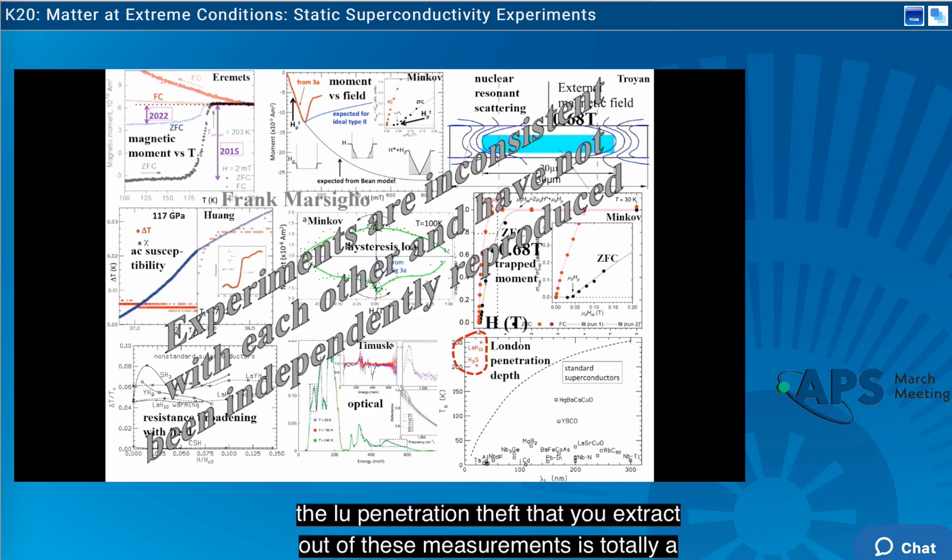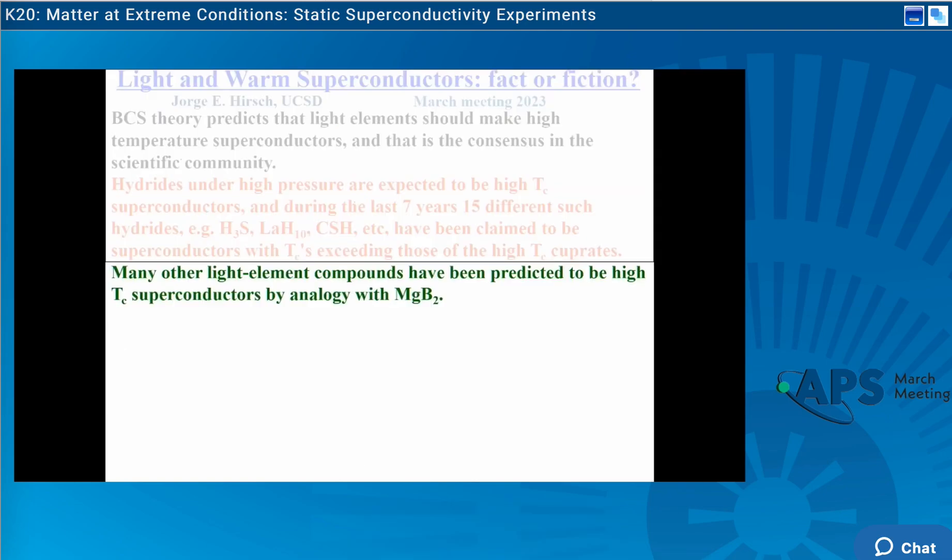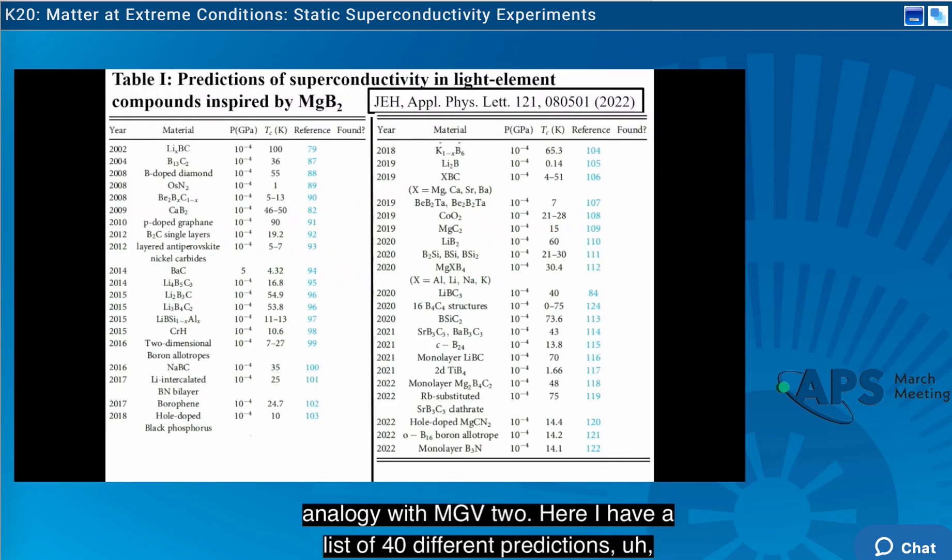And in particular, I would like to point out the London penetration depth that you extract out of these measurements is totally anomalous. It's very short compared to that of standard superconductors that show that as the TC increases, the London penetration depth gets bigger, and you don't have any other example like this of high TC with very short penetration depth.